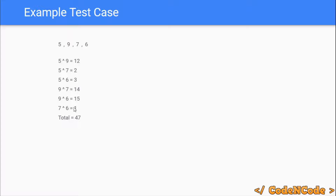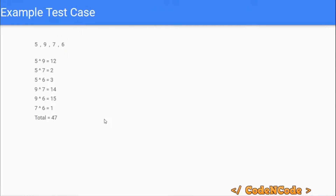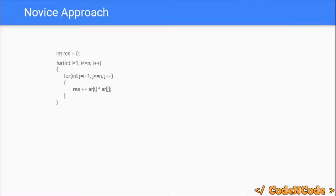The brute force approach is simple: initialize result to zero, then run a loop from 1 to n, and an inner loop j from i+1 to n, adding a[i] XOR a[j] to result each time. The overall complexity of this is O(n²), which is not very good.